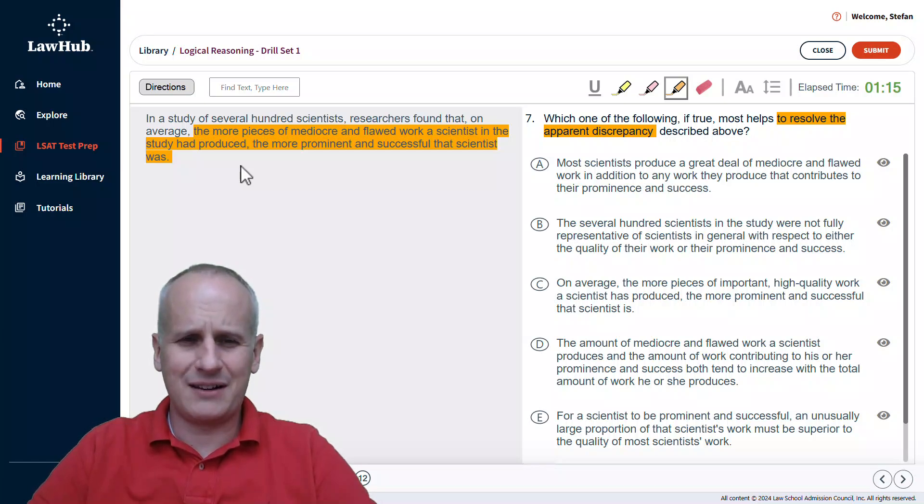We're going to just go ahead and highlight this kind of concluding statement of, oddly enough, among these several hundred scientists, the more pieces of mediocre and flawed work they had, the more prominent and successful they were. And you do still want to think within real-life scenarios, what might be the cause of that?